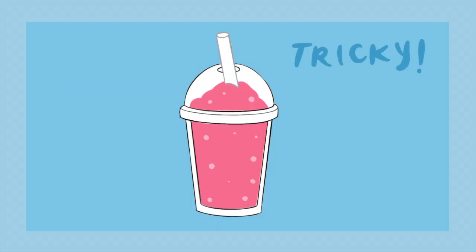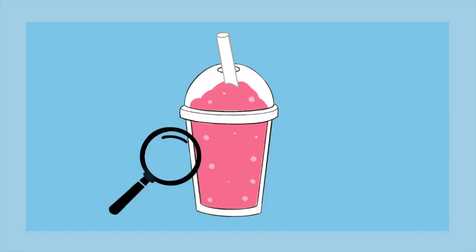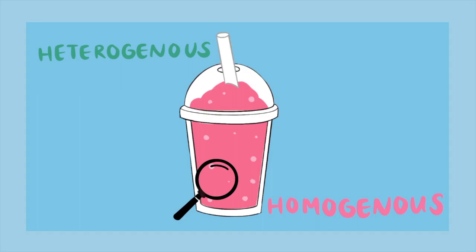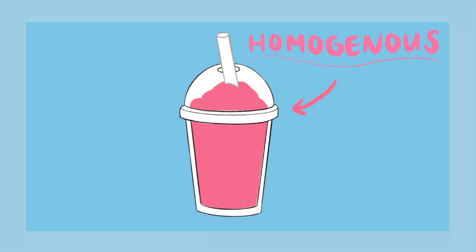Smoothies can be tricky to classify because based on how closely you look, they can be heterogeneous or homogeneous. The more you blend a fruit smoothie, the harder it is to see each individual piece of fruit and the more homogeneous it is.